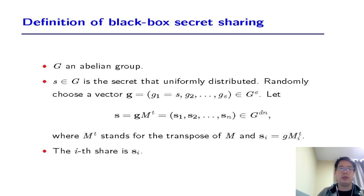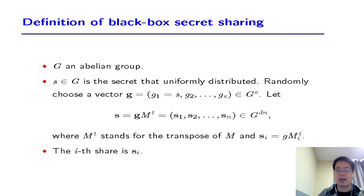Now we turn to the definition of black box secret sharing. Suppose G is an abelian group, and S is an element of G, the secret, which is uniformly distributed. We randomly choose a vector g of length E such that the first coordinate of g is the secret S and the rest are random. We define the vector s to be g times M-transpose. We get a vector in DN-dimensional space over G, and we divide this vector into N sub-vectors, where each sub-vector S_i has length D. Therefore, each S_i is our share.